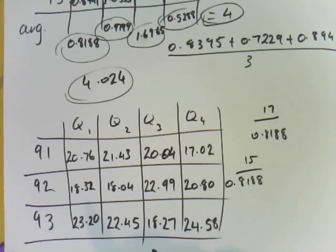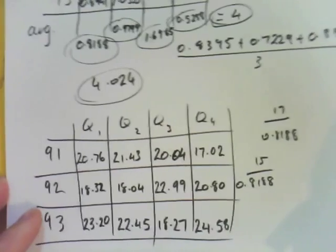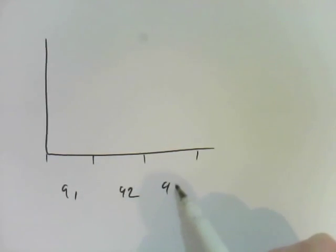Now if I graph that, what it's going to do is remove some of the seasonality. If I give you a sample graph of what this data would have looked like, this is only a very rough sketch. So let's go. In here is 91, in here is 92, and here is 93.